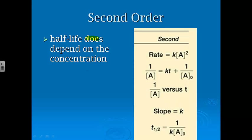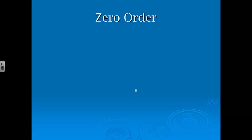This is part of the reason we only have so many possibilities — doing that many graphs is time consuming. For second order, half-life does depend on concentration, and the half-life equation is 1 over k times the initial concentration. Here's the summary chart row: generic rate law, integrated rate law, graph gives a straight line, slope is positive k in y = mx + b format, and half-life is 1 over (k times [A]₀). First order did not depend on concentration; second order does.